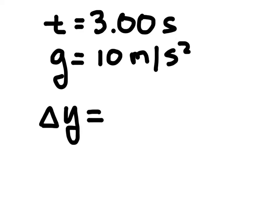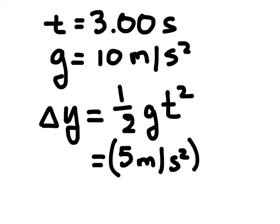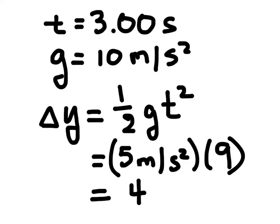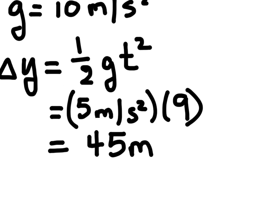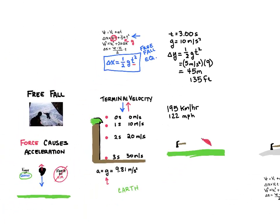Using the free fall equation, we change Δx to Δy since we're working vertically. So Δy = ½ × 10 × 3², which is 5 × 9 = 45 meters, or about 135 feet. If you're planning on jumping off that cliff, you'd want to do this test first — because 45 meters is way too high and it would not be safe to jump. And that is a brief summary of free fall.